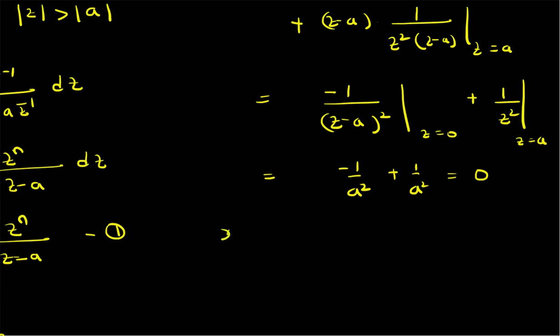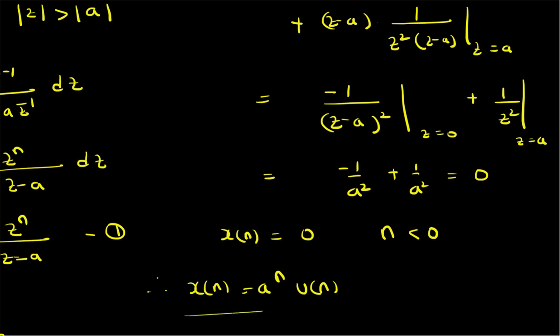We can repeat this procedure for all negative values, and x(n) = 0 for all n < 0. Therefore, x(n) = a^n·u(n) — it equals a^n for n ≥ 0 and zero for n < 0. That is the final sequence x(n) corresponding to this X(z).